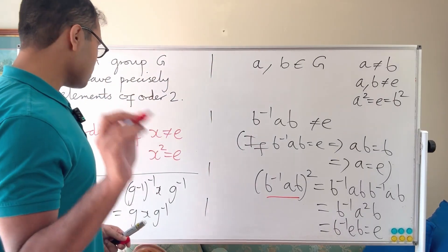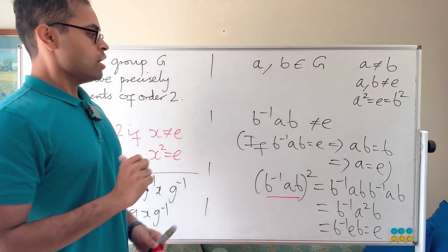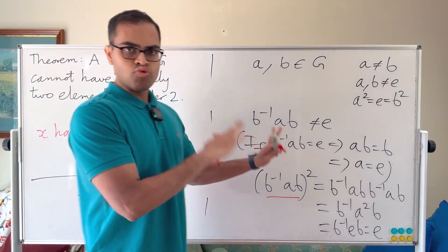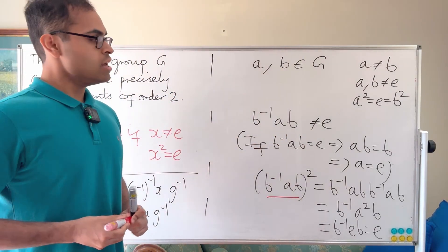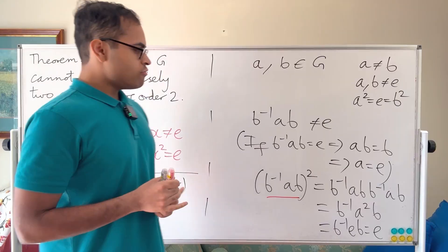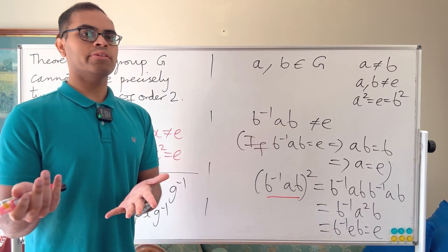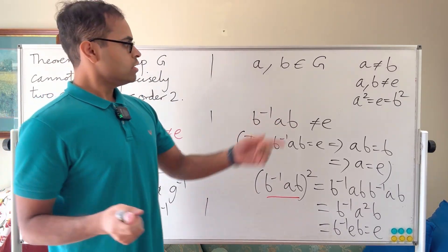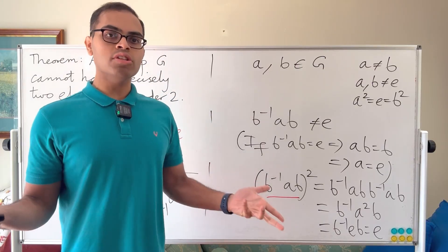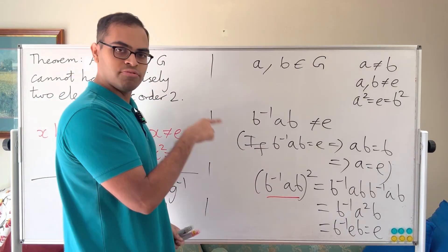We didn't need to go through that calculation explicitly — it's a formal consequence of the fact that conjugation by any element is always an automorphism. But reiterating the point adds clarity. Now we've produced another element of order 2. Is it really another element though? It has to be either a or b, since we assumed those are the only two elements of order 2.